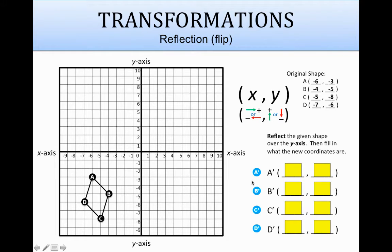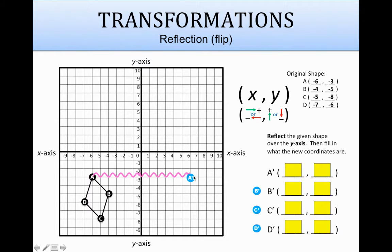Alright, same way we're going to go about these ones as we did the x-axis. We'll grab a prime and drag it over here to a. You would count how far away a is from the y-axis — it's 6 units away on that side. So it's going to be the same distance of 6 away on the other side of that y-axis. That's where you drop and leave your a prime.